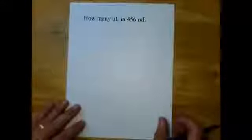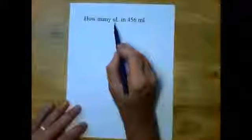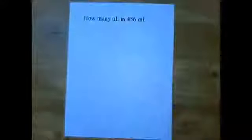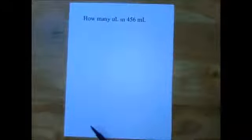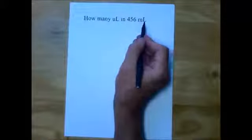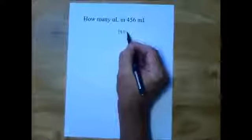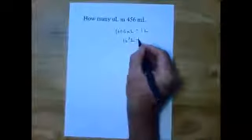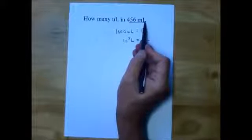Now we get into something more interesting. Neither one of these units is a base unit — each is a prefix with a base unit. This is where it gets more complicated, and this is where conversion factors really come in handy. We want to go from 456 milliliters to microliters. I don't have a direct way to go from milliliters to microliters, but I do know the relationship of milliliters to liters: 1,000 milliliters equals 1 liter, or ten to the third milliliters equals 1 liter. Find a conversion factor that includes the prefix and the base unit.